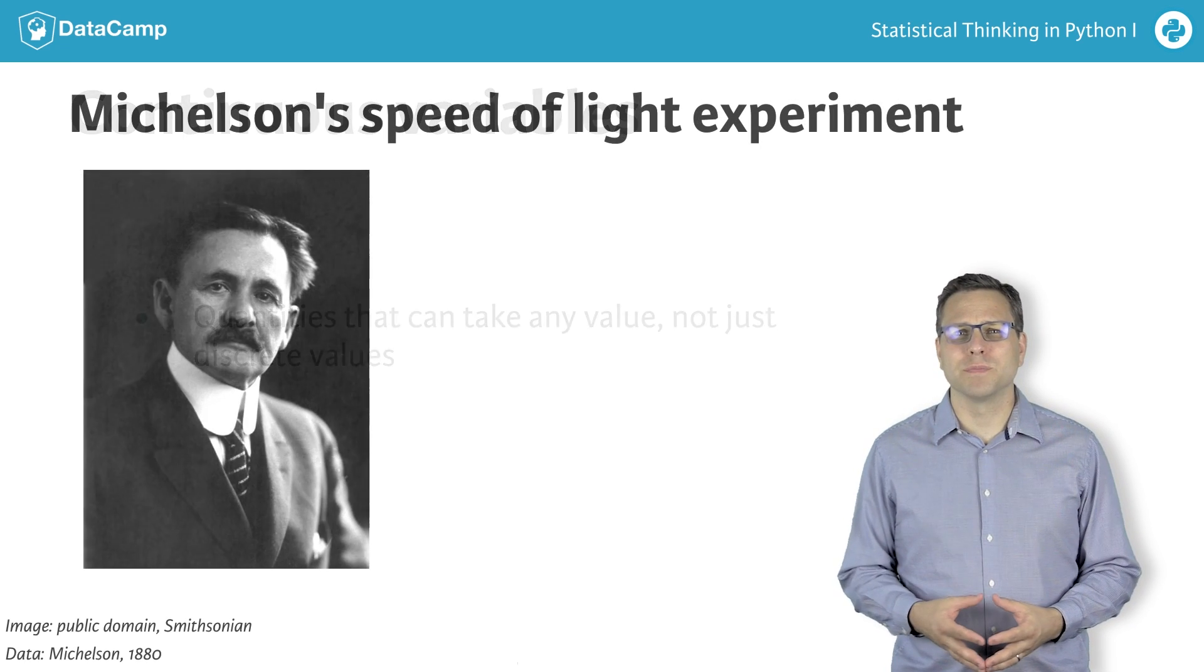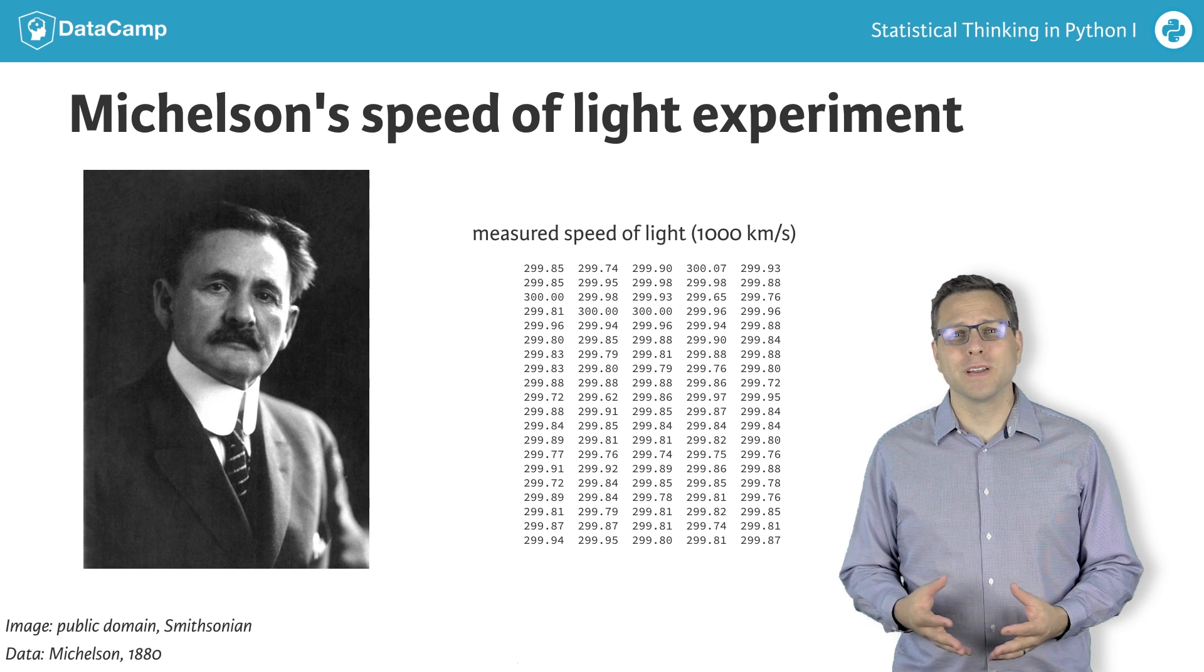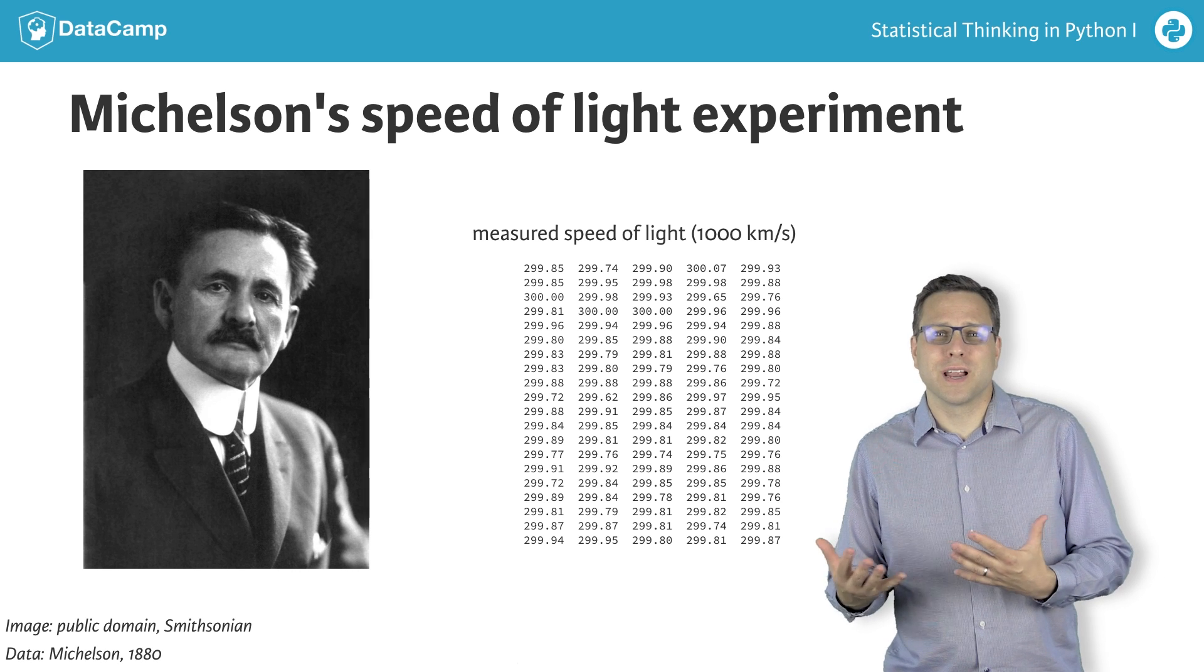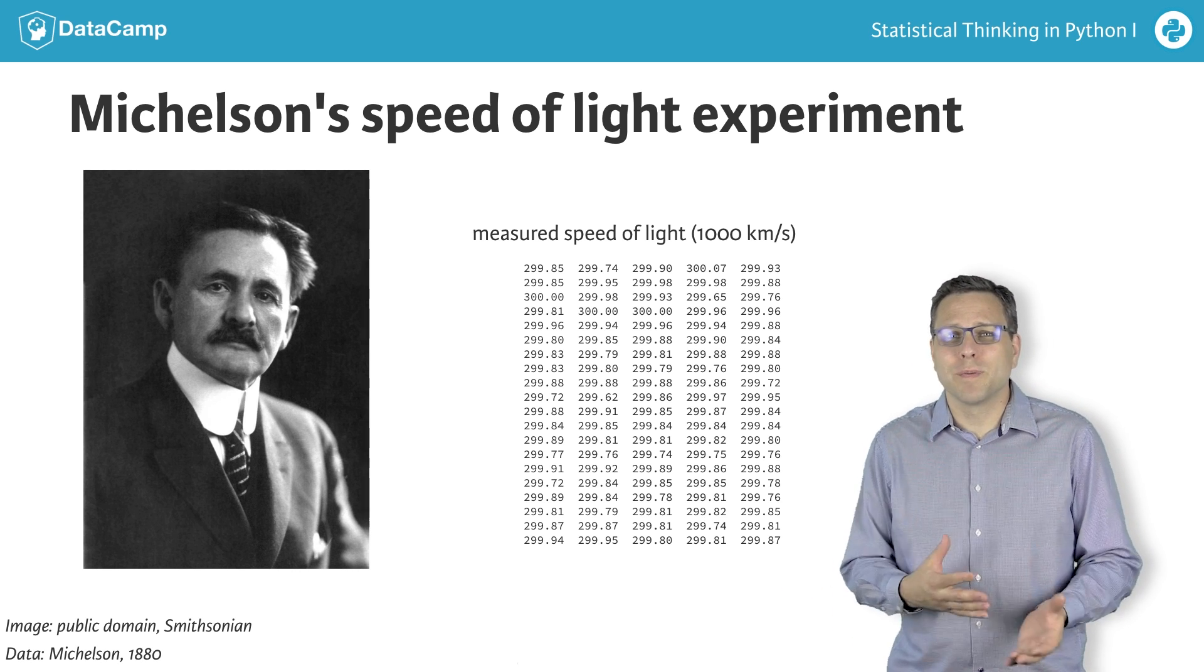In 1879, Albert Michelson performed 100 measurements of the speed of light in air. Each measurement had some associated error with it. Conditions such as temperature, humidity, alignment of his optics, etc., changed from experiment to experiment.